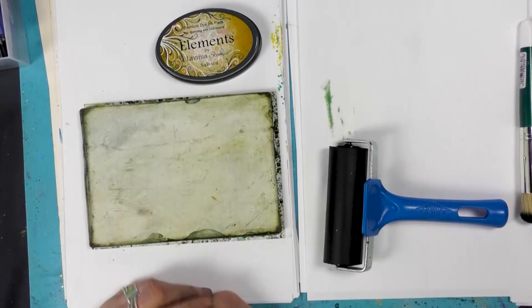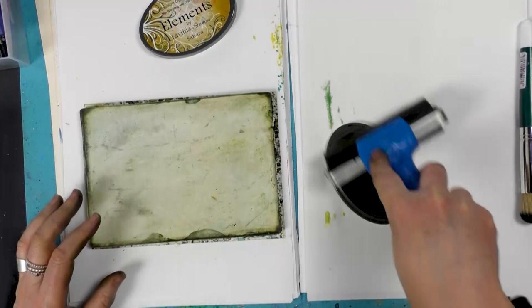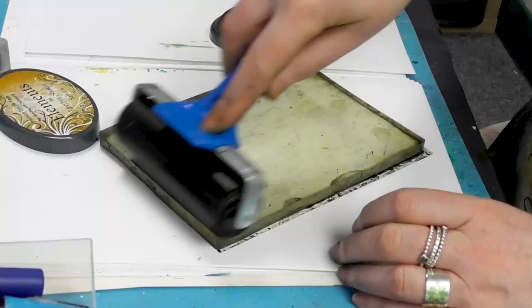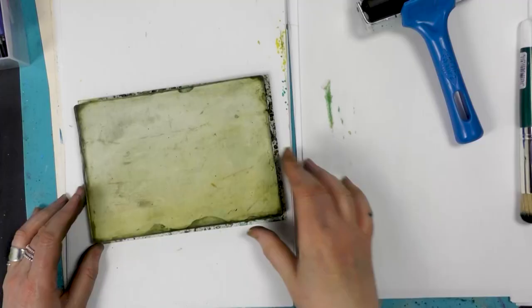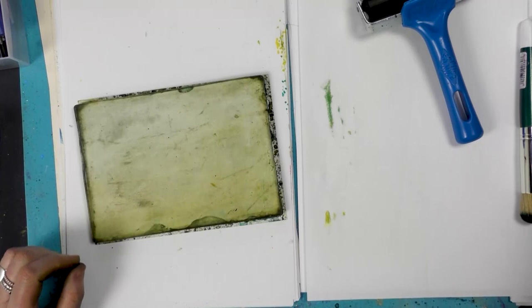So to start with I'm going to ink up the Sahara and then just transfer that ink onto the gel press.